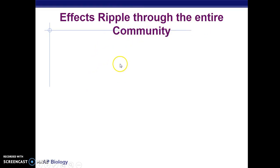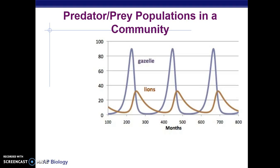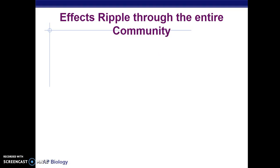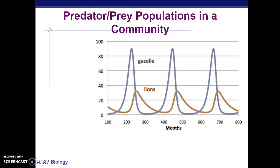The point is that predator-prey relationships need to exist at some equilibrium with continuous cycling — spiking of gazelles and then spiking of lions. If the lions grow out of control for some reason, the gazelle population can go down.